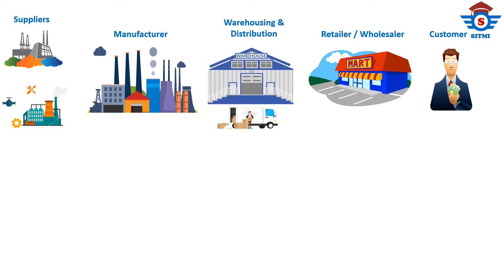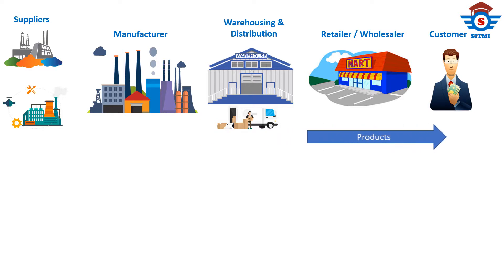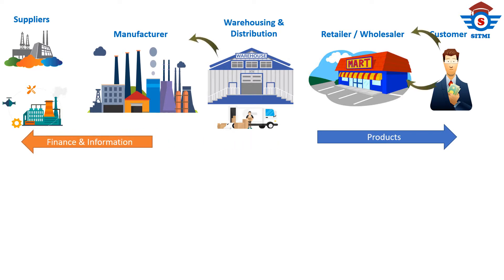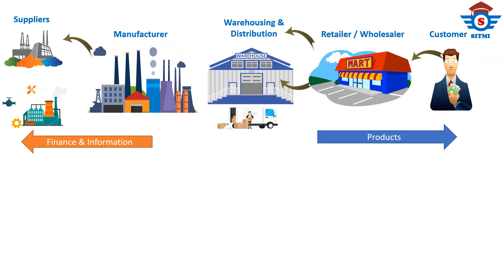In the entire process, there is a forward movement of product and a reverse movement of finance and information. Let's see how information moves backward. Information like how many products, features, and qualities are being bought or purchased by the end customer goes back to retailers.